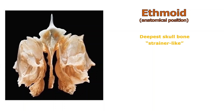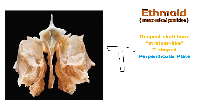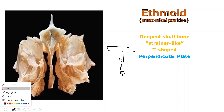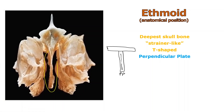The word comes from an old Greek word that means something like strainer-like or sieve-like — named that because it has holes in it somewhere. It is T-shaped if you want to get fancy with it. I'm going to draw this bone like a T, and the perpendicular plate is the part sticking down. In the actual image of the bone, I can circle it in yellow pretty obviously.